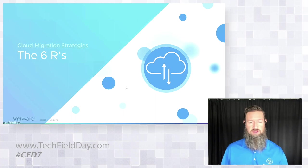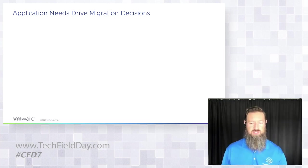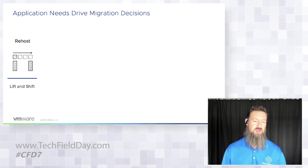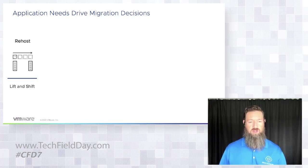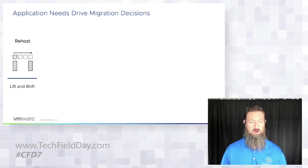First we'll jump into the six R's of cloud migration strategies to understand what application needs drive certain migration decisions. The first is re-hosting — this is just lift and shift. We're going to take those VMs and forklift them somewhere else: onto another hypervisor, into a cloud provider, or a hosting company. We're just taking the VM or workload and moving it without really manipulating it in any way.